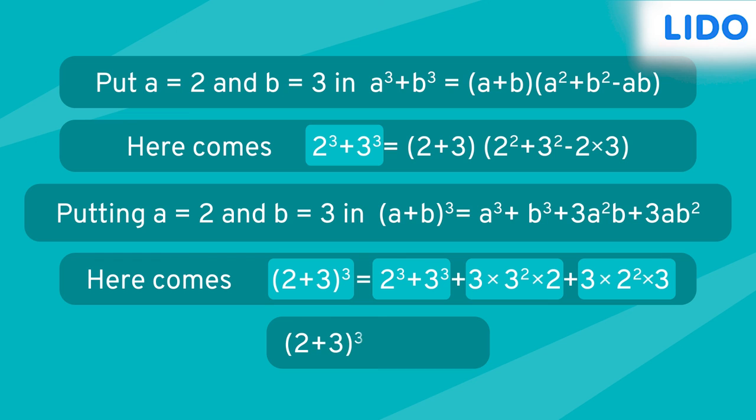This makes (2 plus 3) the whole cube greater than 2 cube plus 3 cube. Therefore, to conclude, sum of cubes of 2 numbers is not equal to the cube of sum of 2 numbers.